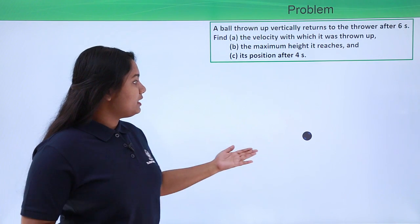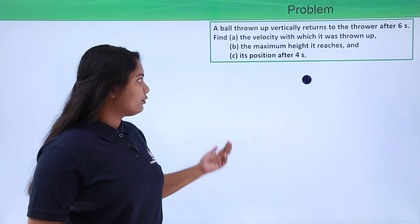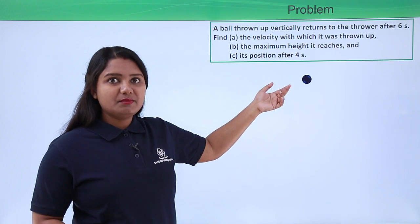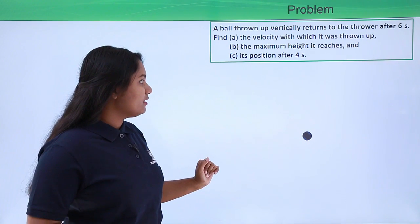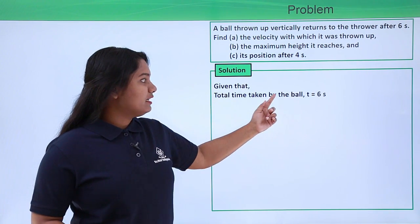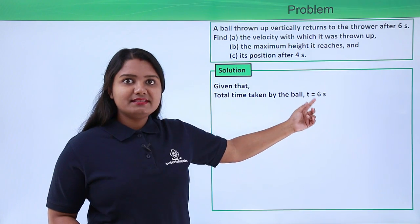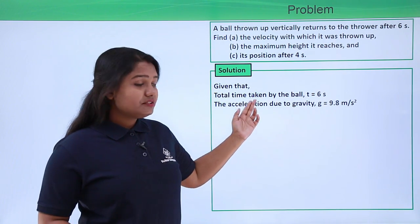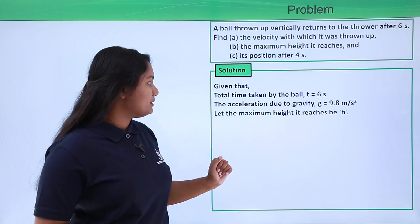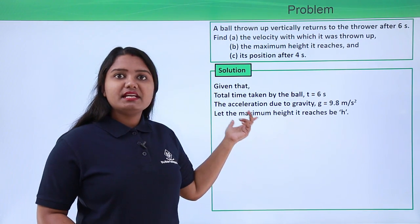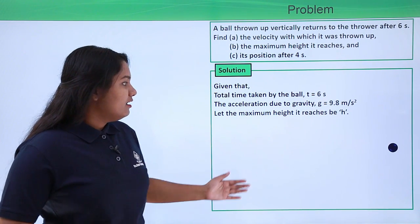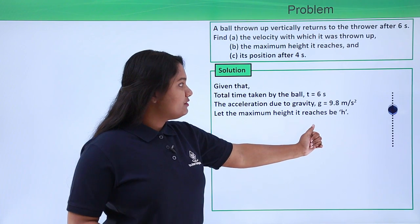Let us visualize the conditions of the problem. The ball was first thrown up, and when it reaches the maximum height it falls down again. The total time taken by the ball is t equals six seconds. The acceleration due to gravity is g equals 9.8 meters per second squared, and we will take the maximum height it reaches as h.